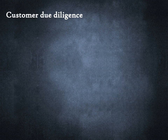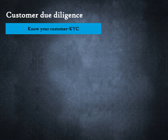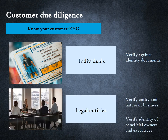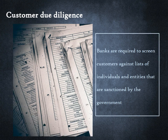Customer due diligence, at the most basic level, means that your customers are who they say they are — this is called Know Your Customer, or KYC. For individuals, it means verifying their identity and address records against documents like driver's licenses and passports. For legal entities, it means verifying not just the formation documents of the entity and its nature of business, but also verifying the identity of the entity's beneficial owners and key executives. Banks are also required to screen customers against lists of individuals and entities sanctioned by the government. A well-known list is the OFAC list — maintained by the Office of Foreign Assets Control, a department within the U.S. government's Department of Treasury.